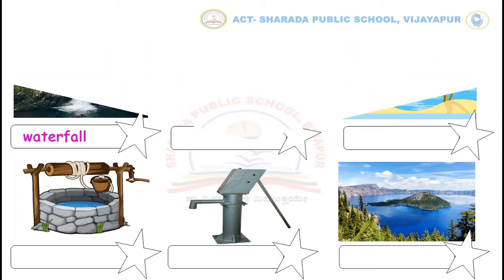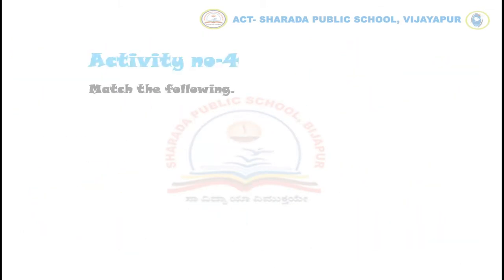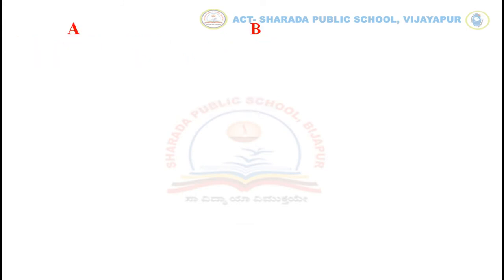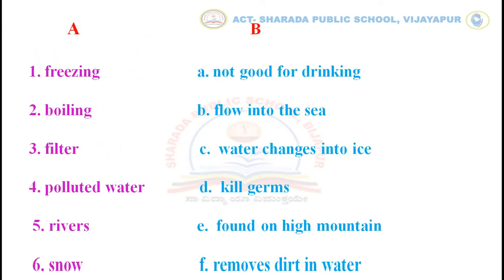Let's move to activity number 4. Match the following. In this activity, you have to match column A with column B. Two have been done for you.